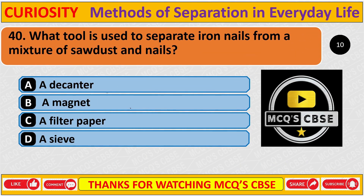Question: What tool is used to separate iron nails from a mixture of sawdust and nails? Correct answer is B: A magnet.